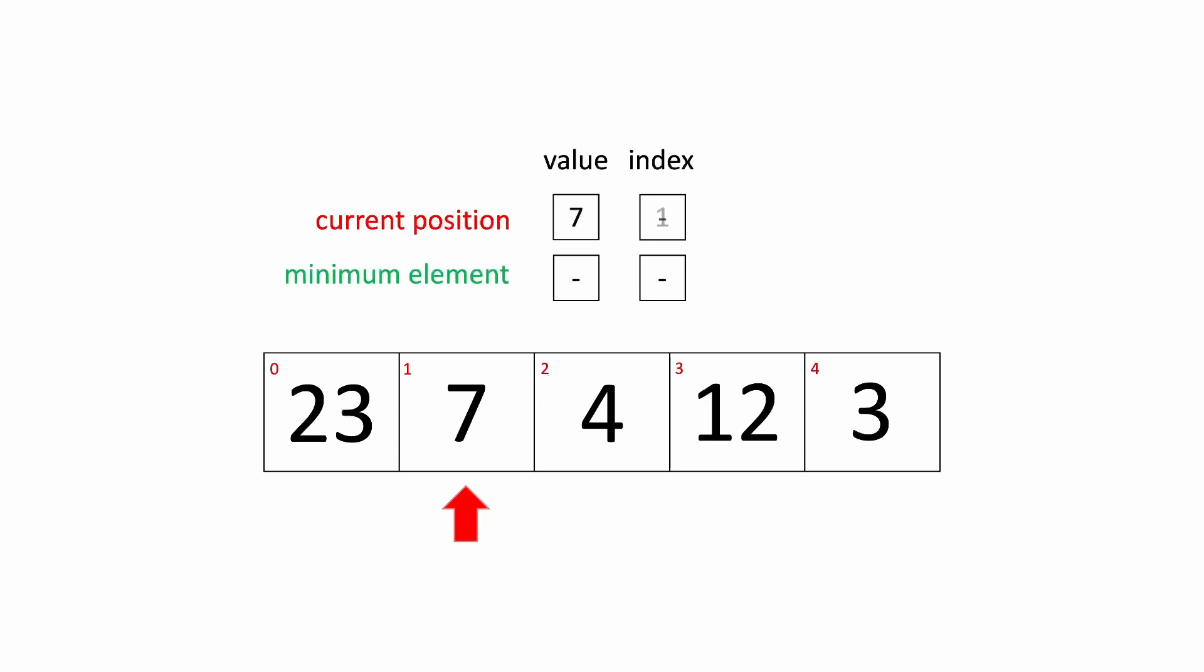We're going to have two pointers, one for the current position in the array and another for the current minimum element in this iteration.